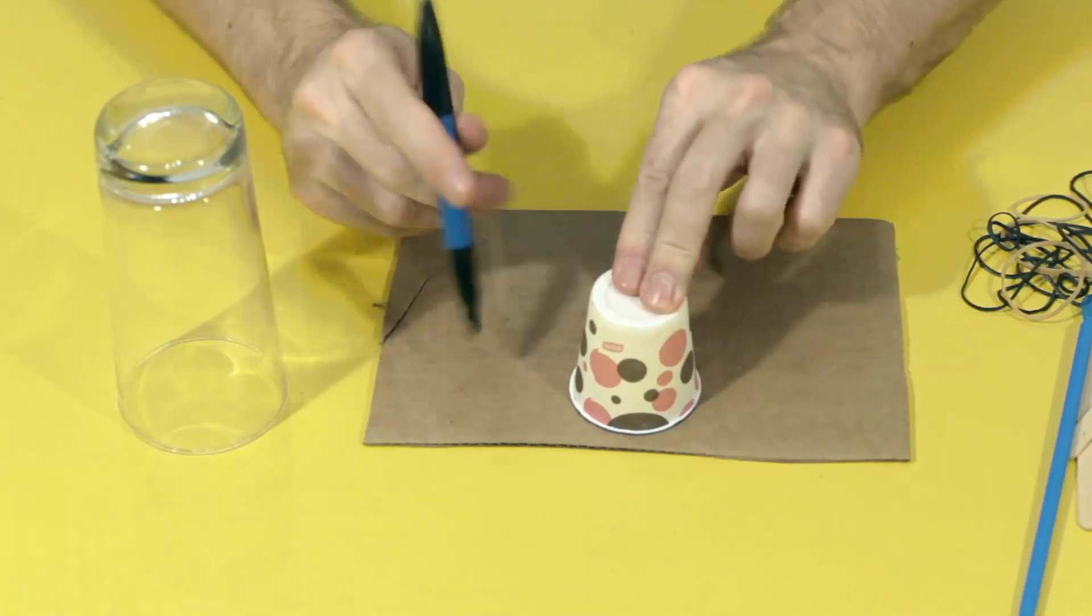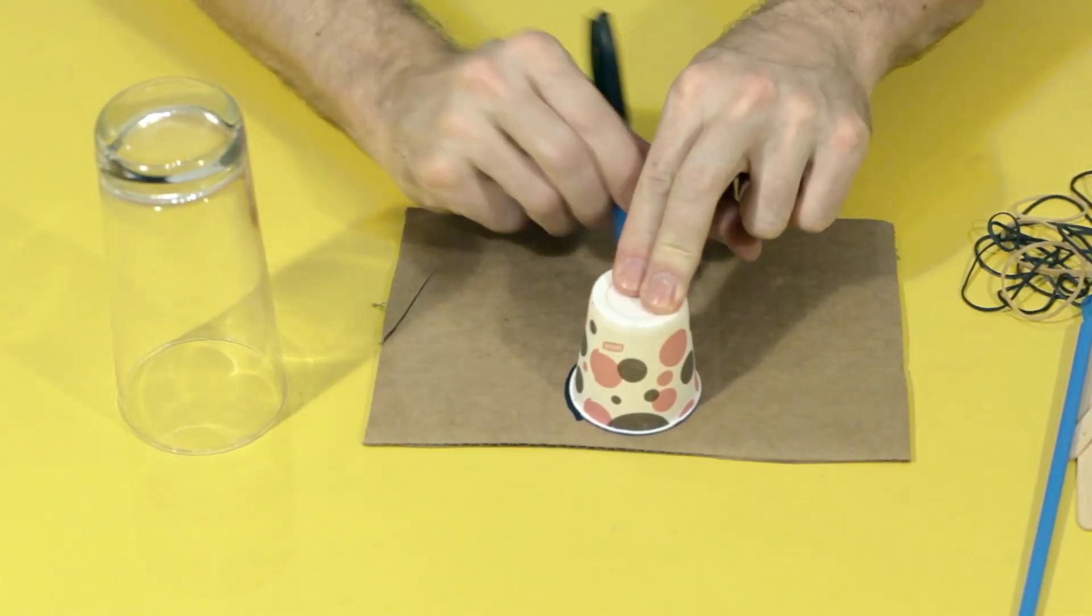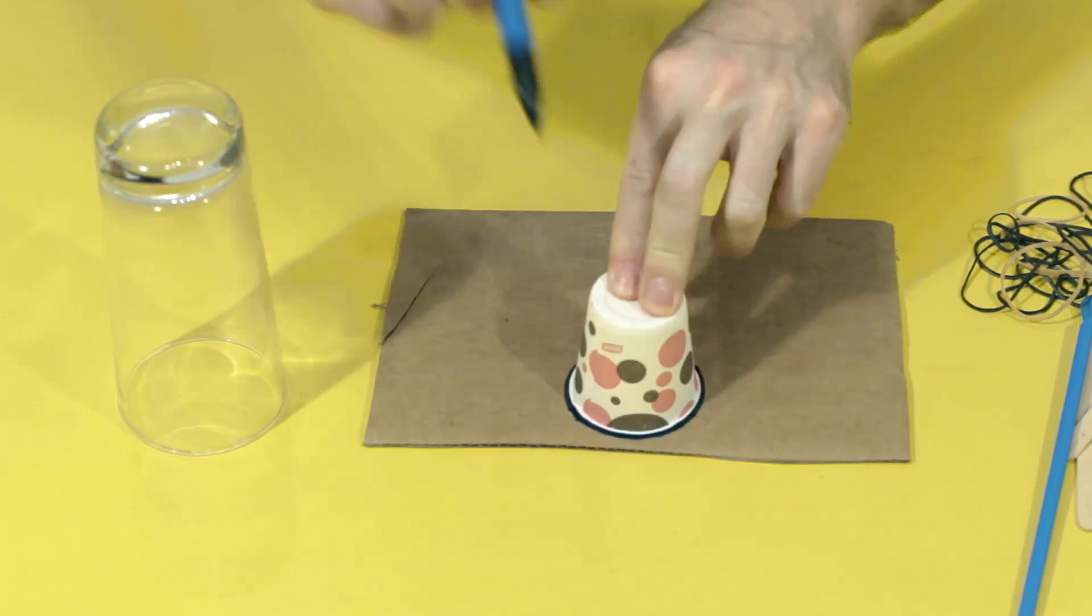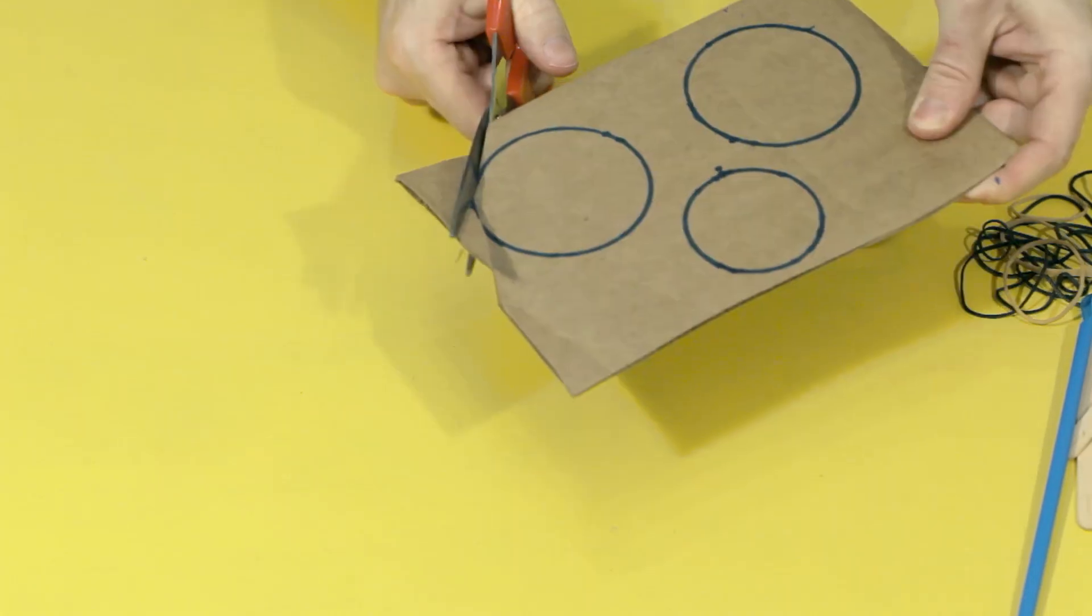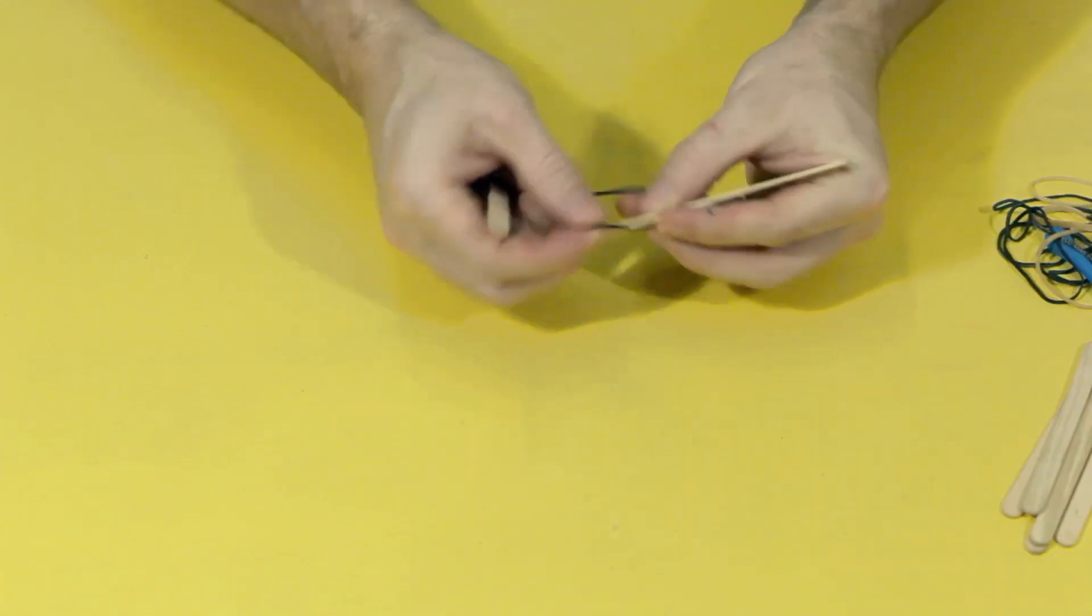Here's a quick explanation of how to build your dragster. First, use anything round to trace three circles on your piece of cardboard. Remember you want two big and one small circle. Then cut out your wheels.